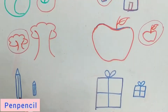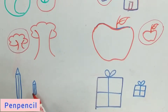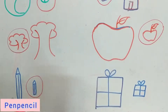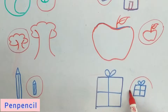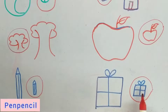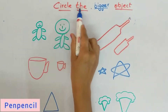This is a big pencil and this is a small pencil — this is the smaller one, so we are circling this one. Come on, you tell me which we have to circle — this one or this one? Yes, correct! This is the smaller one. This is a gift — gift packing — this is the smaller one.